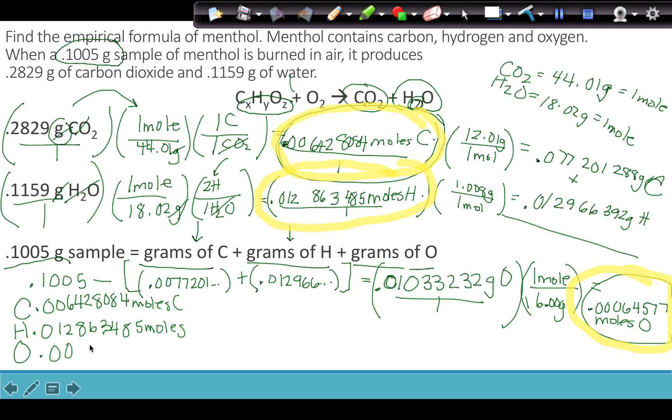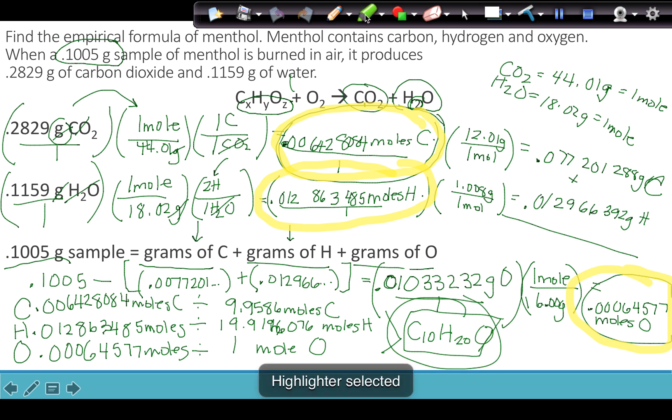And for O, I have 0.00064577 moles. We're going to divide each one by the smallest result, which is the one with the three zeros in front, and I wind up getting 9.9586 moles of C, 19.9196076 moles of H, and 1 mole of O. What that means, 9.95 is 10, 19.91 is 20, and then O has a subscript of 1. So this right here would be my empirical formula for menthol, C10H20O.